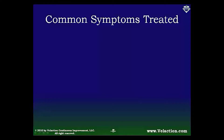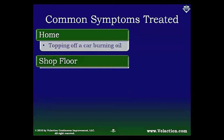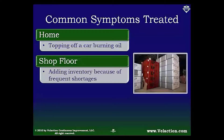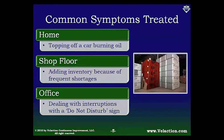This applies in all aspects of our lives. At home, we do things like top off the oil in our car every month when there is a slow leak or if it is burning oil. On the shop floor, the most common way we treat symptoms of inefficient or ineffective processes is with inventory. Inventory is like aspirin though — it takes away the pain, but the real problem is still there. We even see examples of this in the office, where people put up do not disturb signs or hole up in a conference room to get work done without interruption.